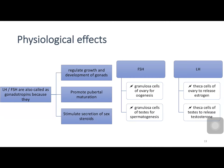The important functions of gonadotropins are: they regulate growth and development of gonads, promote pubertal maturation, and stimulate secretion of sex steroids. There is a minor difference between FSH and LH: follicle stimulating hormone mainly stimulates the gonadal cells for production of oogenesis or spermatogenesis, whereas luteinizing hormone causes production of estrogen in females and testosterone in males.